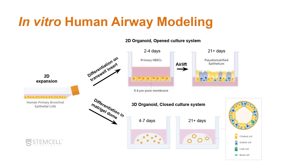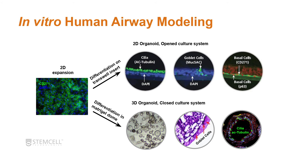Alternatively, you can differentiate cells in a Matrigel dome. First expand the cells, then switch to differentiation media. Over 21 or more days, you see the presence of a lumen in the organoids. Different cell types can be observed: ciliated cells, goblet cells, and club cells depending on the cell source. With 2D transwell differentiation, you can visualize acetylated tubulin as a cilia marker, MUC5AC for goblet cells, and p63 for basal cells. Similarly, in 3D organoids you can see open lumens, goblet cells, and cilia lining the apical side facing the lumen.